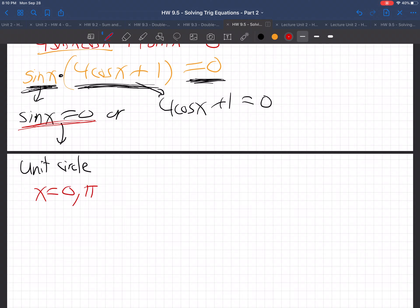Now, for the other side, we're going to have to solve for the cosine x. I get 4 cosine x is negative 1. And then I'm going to divide both sides by 4. And I get cosine x is negative 1/4. Now, that's not on the unit circle. For that, I'm going to have to go to the calculator.